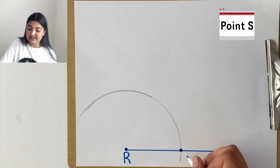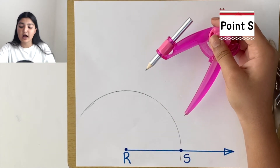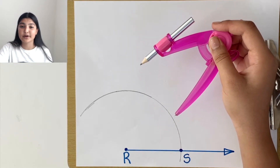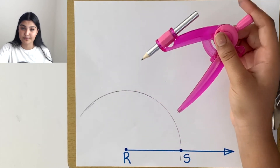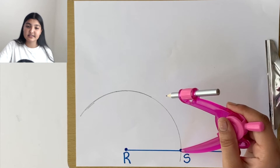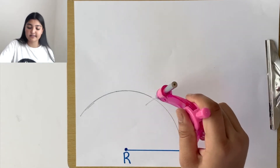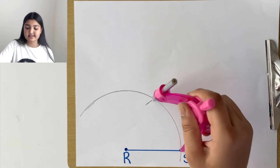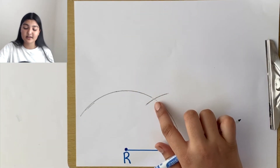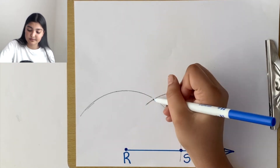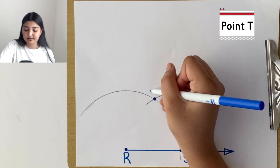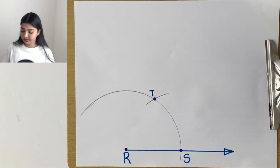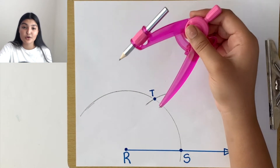Let's label this point as S. Now, taking our compass again — it's extremely important to keep the compass at the same measurement as before. Placing the leg of the compass on point S, make an arc that intersects the first one. These two arcs intersect at a point; let's label this point as T.